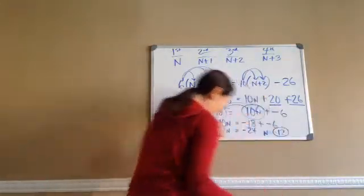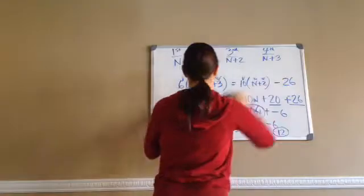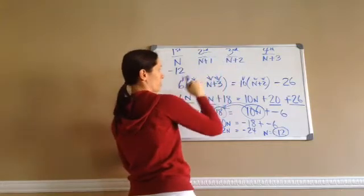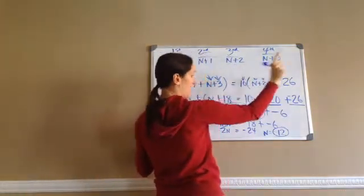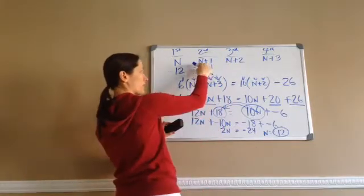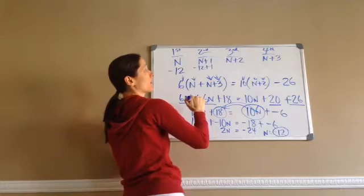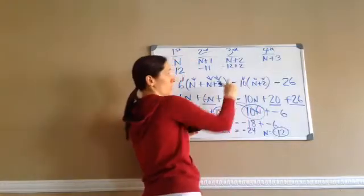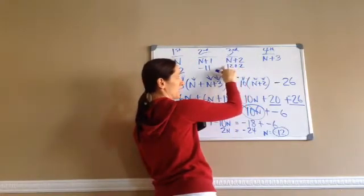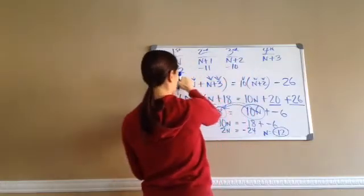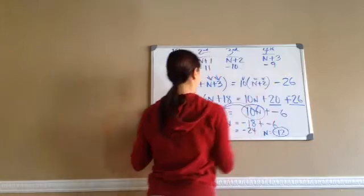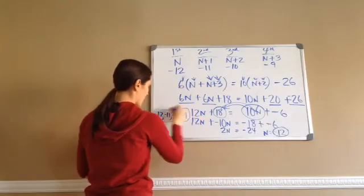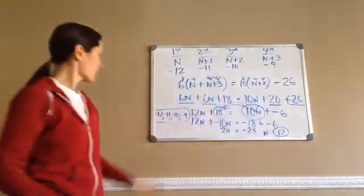Pay attention to what happens here. If my n is negative 12, you might think negative 13, negative 14, negative 15 — but pay attention: negative 12 plus 1 is actually negative 11. And negative 12 plus 2 would actually be negative 10. And negative 12 plus 3 is negative 9. So as you can see, the four consecutive integers are negative 12, negative 11, negative 10, negative 9. Those are the four consecutive integers that are the answer to that problem. That is Lesson 76.